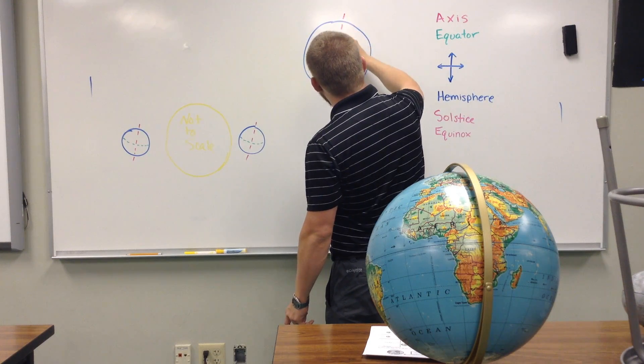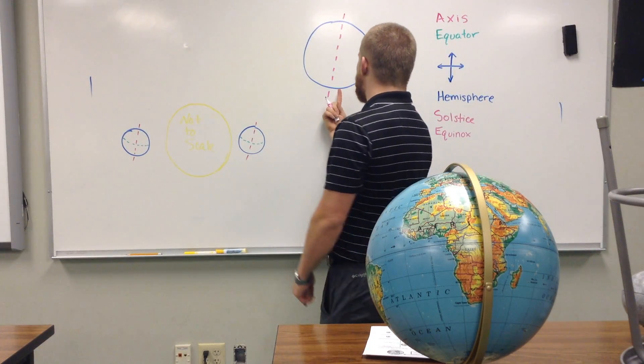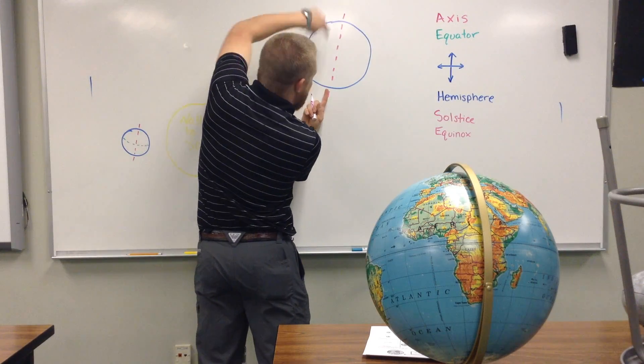So, if I was going to draw the axis of the earth, it would be like that. So, that means that instead of the earth spinning straight up and down, it actually spins like this. So, it spins like a basketball, but at this angle.